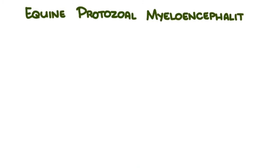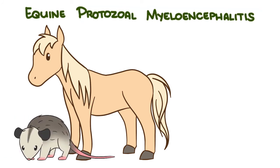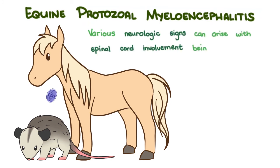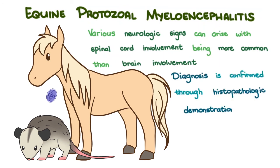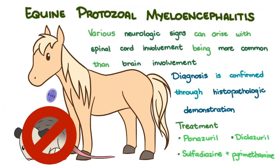To summarize, equine protozoal myeloencephalitis is a neurologic disease in horses caused by Sarcosystis neurona. Horses get infected by ingesting feed or water contaminated with opossum feces that have sporulated oocysts. Various neurologic signs can arise, with spinal cord involvement being more common than brain involvement. Diagnosis is confirmed through histopathological demonstration of the pathogen in central nervous system lesions. Treatment options include ponazuril, diclazuril, or a combination of sulfadiazine and pyrimethamine. Prevention is by removing access of opossums to horses.